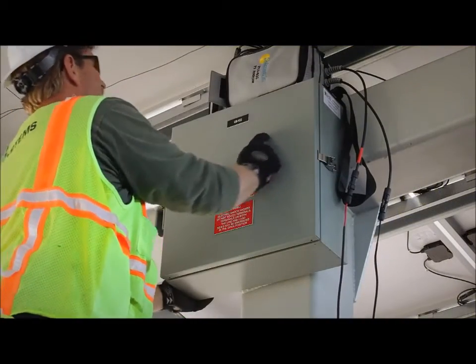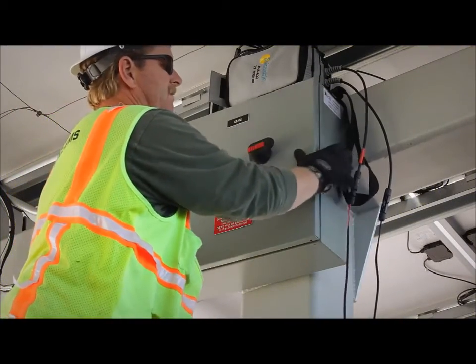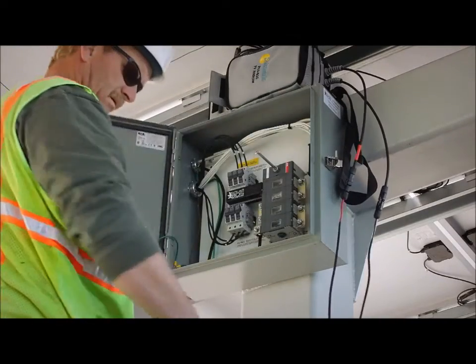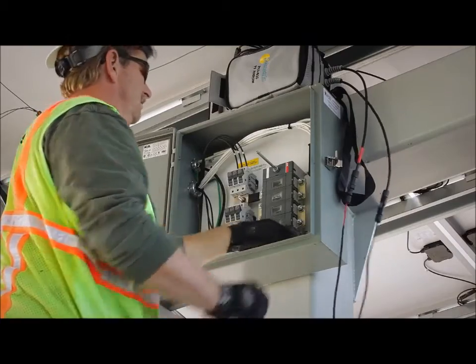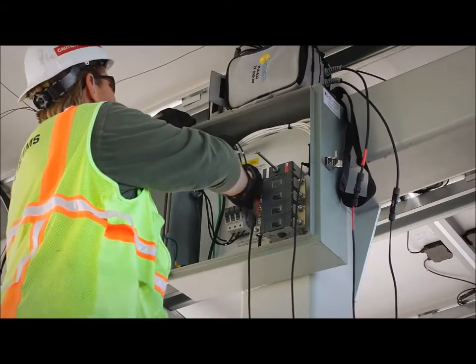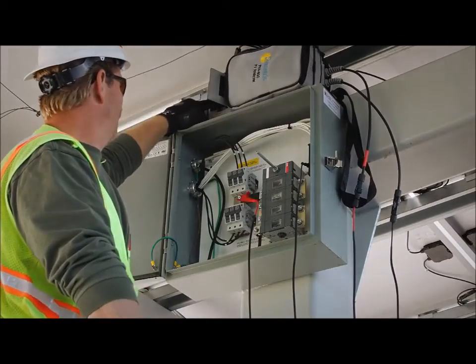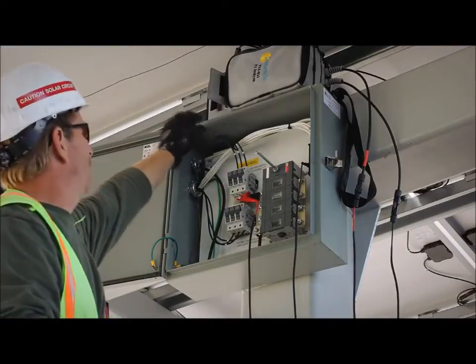Operation of a Solmetric PV Analyzer is fast and straightforward. At a commercial or utility scale installation, the PV Analyzer can be connected at each combiner box once it has been isolated from the inverter. It takes just minutes to test all the strings connected to a combiner box, making it possible to test large installations in just a few hours.